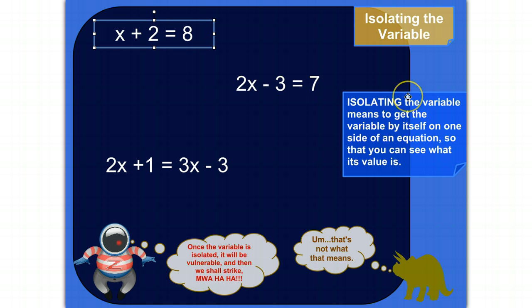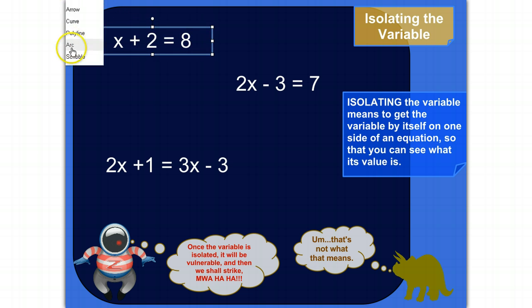So what it means is to get the variable by itself on one side of an equation so that you can see what its value is. So for example, let me grab, where's my, there we go. And today I've been using green. I like green. I might just stick with that for a while.